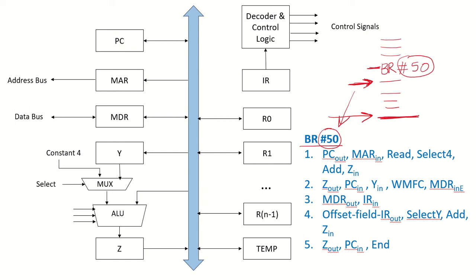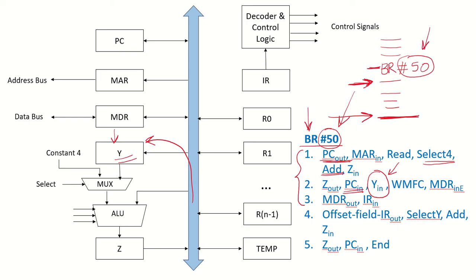In my earlier lecture on the single bus processor I discussed the instruction fetch part. When updating the program counter, we took out the program counter contents, added 4, and when putting it back in the next clock cycle, we also put the updated contents in temporary register Y. So if there is a branch instruction where we need to add an offset to the program counter, this content is already available in Y — we need not bring out the program counter content again.